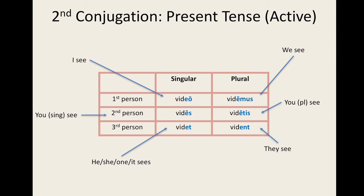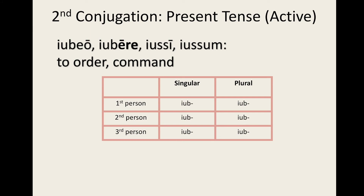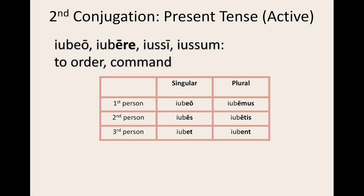Here is the verb iubere, 'to command' or 'to order' — we've seen this before. Pause this video to try and conjugate this verb for yourself. How did you do? The endings for iubere are: iubeo, iubes, iubet, iubemus, iubetis, and iubent.